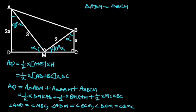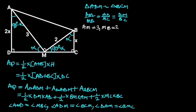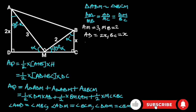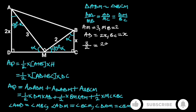The proportionality of their corresponding sides gives: AM over MB is equal to AD over MC, and AD over MC is equal to DM over BC. Substituting the values — AM equals 3, MB equals 2, AD equals 2X, BC equals X — we get 3 over 2 is equal to 2X over MC, and 2X over MC is equal to DM over X.